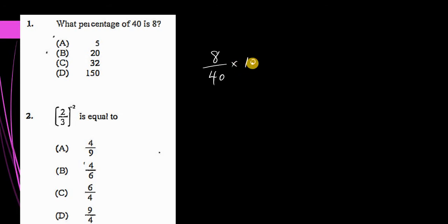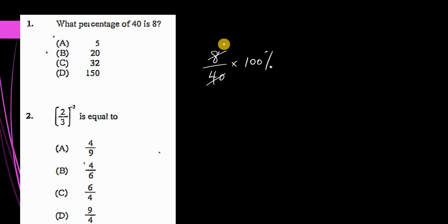We want to express it as a percentage, so we multiply by 100%. To convert a fraction to a percentage, we have to multiply by 100%. Now, we're going to simplify the numerator with the denominator. We only simplify using a common factor with the numerator and the denominator.